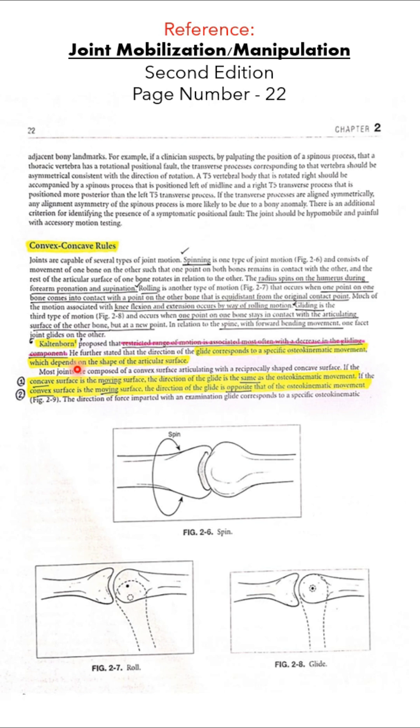He proposed two rules. First, when the concave surface is the moving one, the direction of glide is same as the osteokinematic movement. If the convex surface is moving, the direction of glide is just the opposite.